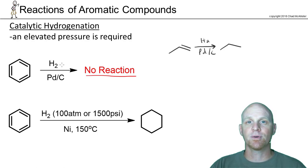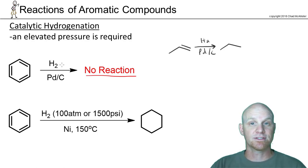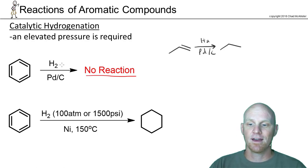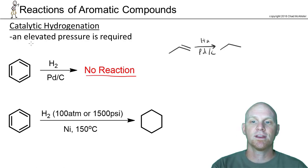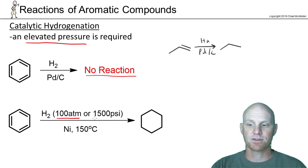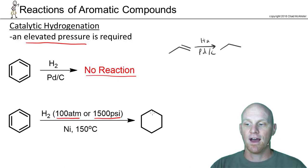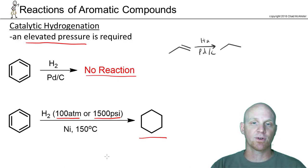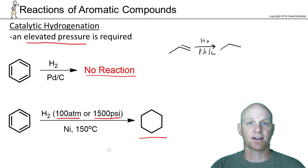Benzene and aromatic compounds in general are much more stable due to resonance stabilization from aromaticity than a simple alkene. So we're going to need an elevated pressure to make this work — you might see that as 100 ATMs, or in pounds per square inch, 1500 psi. But that will reduce the ring completely: all pi electrons gone, giving cyclohexane.